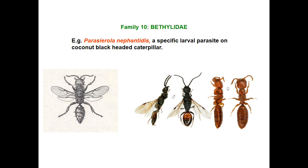The family Bethylidae consists of ant-like colored wasps — they look like ants in appearance. Females of many species are wingless — mostly wingless. For example, Parasierola nepantidis is a specific larval parasitoid on the coconut black-headed caterpillar.